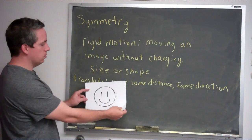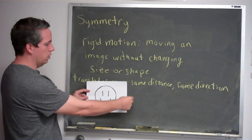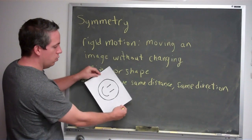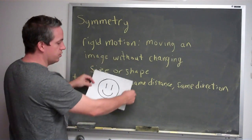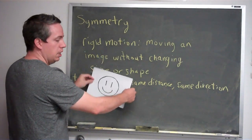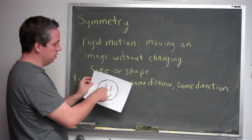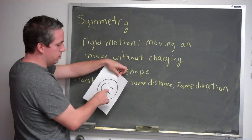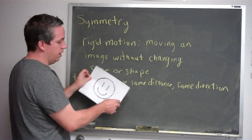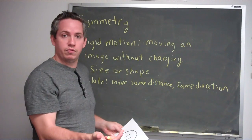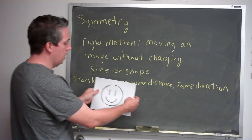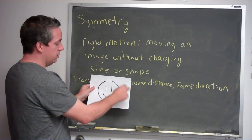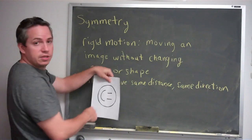We could also rotate. Rotation is rotating a certain angle about some center point. If the center is right here and I'm rotating about that point, then I'm doing a rotation, which is an example of rigid motion. The shape and the size did not change, so a rotation is an example of rigid motion.